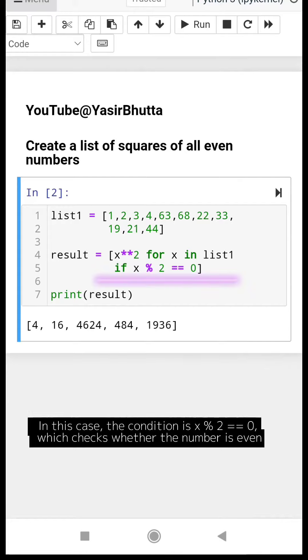In this case, the condition is x % 2 == 0, which checks whether the number is even.